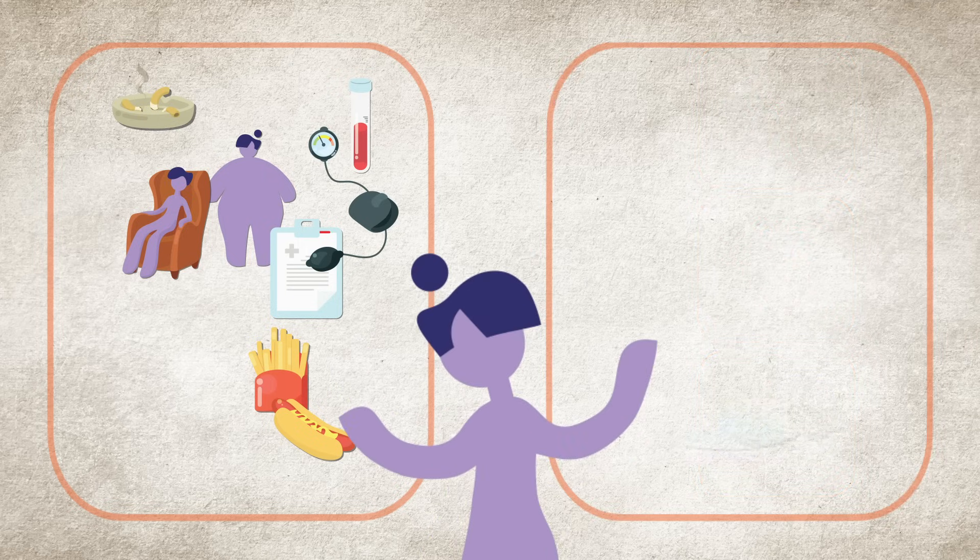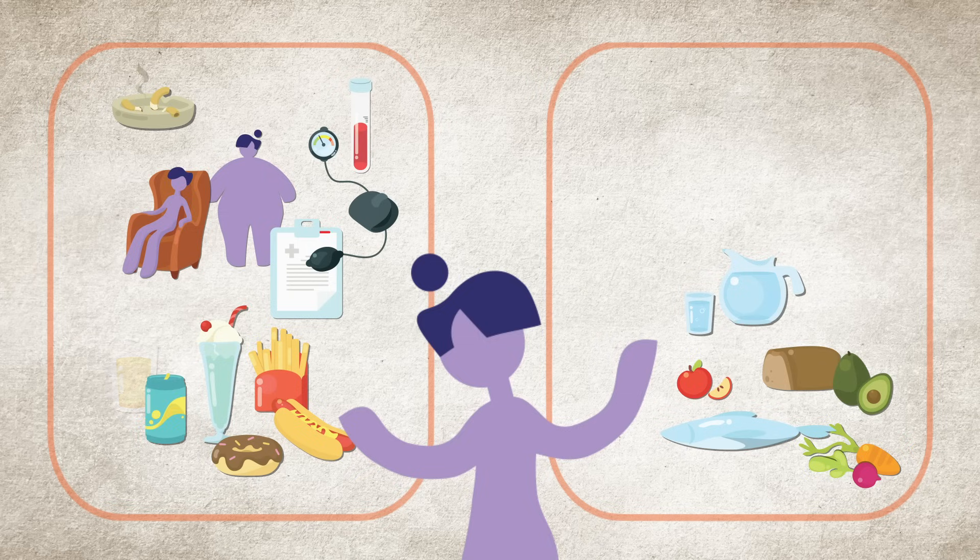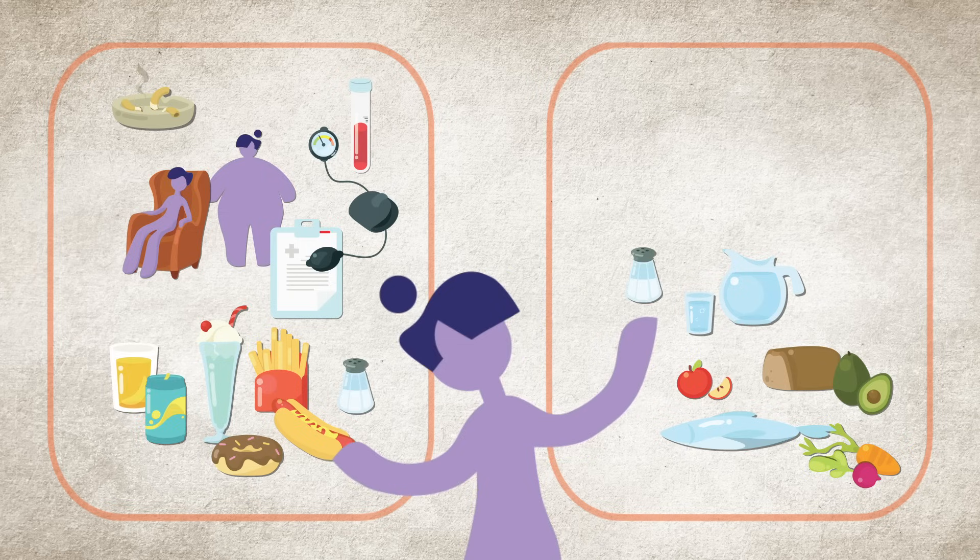That includes eating more fresh vegetables, fruit, and unprocessed grains instead of sugary and processed foods, drinking water instead of soda or juice, managing salt intake,